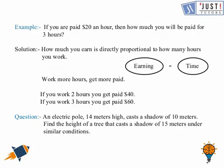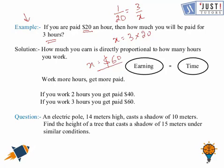Now we move ahead and there is an example for you. The example says if you are paid $20 for one hour, then how much you will be paid for three hours. So for one hour, you are paid $20. So for three hours, how much amount will be paid? So it's like x equals three times 20, which is x equals $60. So we can say that earning is directly proportional to the time.